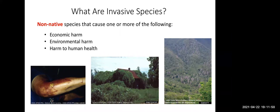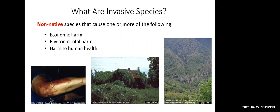Here we have some examples. On the far left you can see someone who has suffered a chemical burn due to giant hogweed. The center picture shows an outbuilding consumed by kudzu. And on the far right we can see massive hemlock die-off due to hemlock woolly adelgid, as an example of environmental harm.